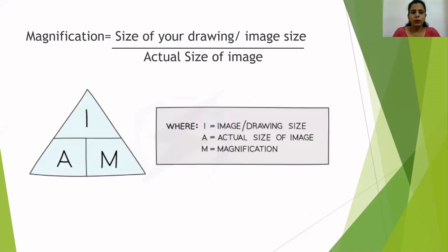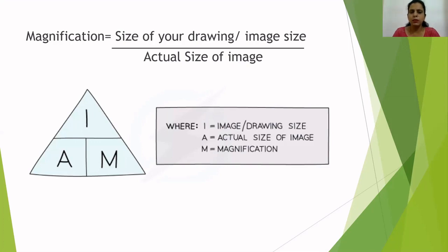When we talk about magnification, the formula for calculating it is: size of a drawing or image divided by the actual size of the specimen. So magnification equals image size over actual size.